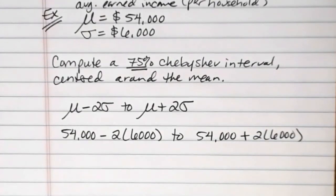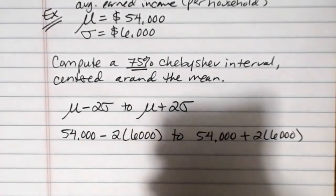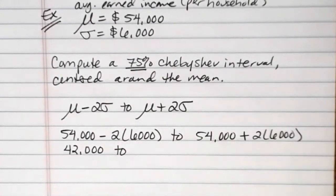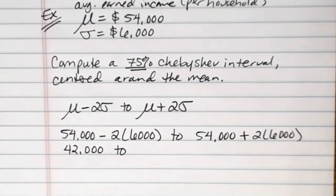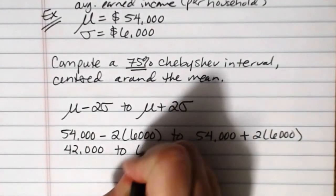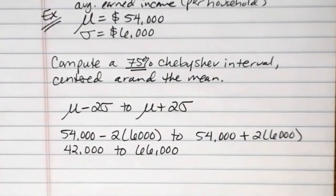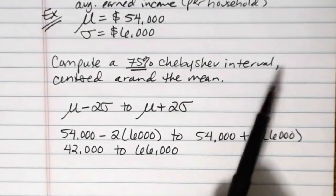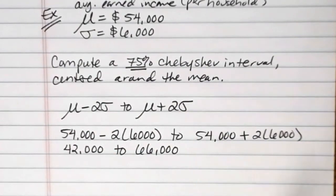So if I take 54,000 and subtract 2 times 6,000, which of course is 12,000, I am looking at 42,000 on the low end to, if I take 54,000 and add 12,000, then I'm looking at 66,000. So there's the computation piece. Compute a 75% Chebyshev interval centered around the mean. We did that.